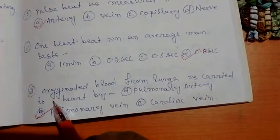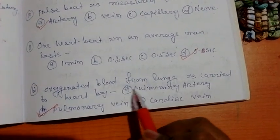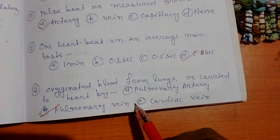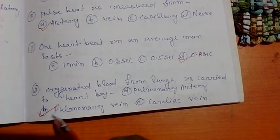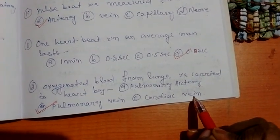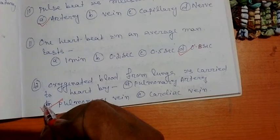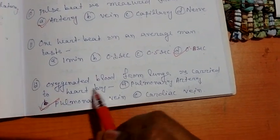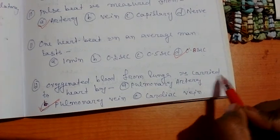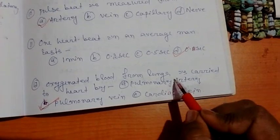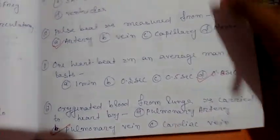Question number 12: oxygenated blood from lungs is carried to the heart by — three options: pulmonary artery, pulmonary vein, and cardiac vein. The right option is option B, that is pulmonary vein. Oxygenated blood from lungs is carried to the heart by pulmonary vein.